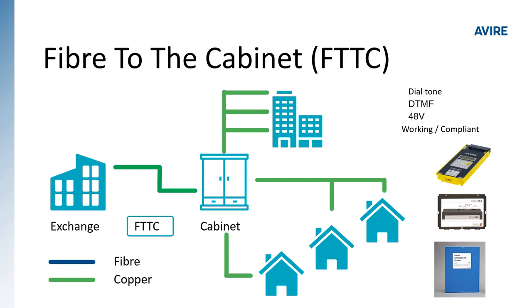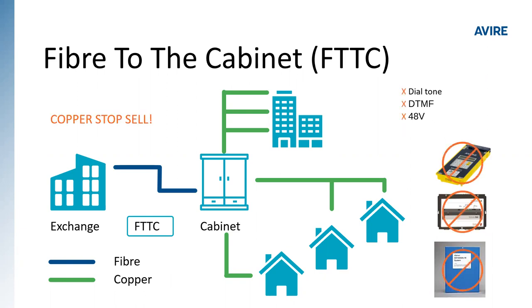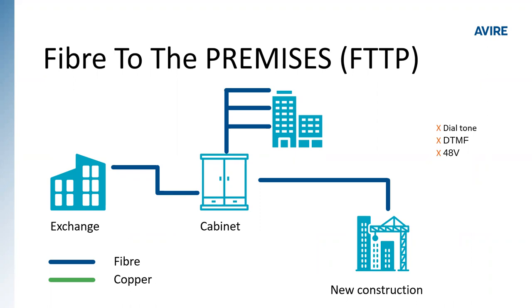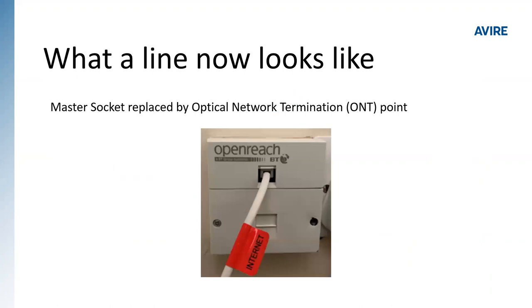With fiber to the cabinet, the connection from exchange to cabinet and to premises is all copper — providing dial tone, DTMF signaling, and 48 volts of line voltage. When we enter copper stop-sell, we lose analog support and all these telephones will potentially be compromised. With fiber to the premises, we have fiber end to end, including for any new construction — no dial tone, no DTMF, no 48 volts.